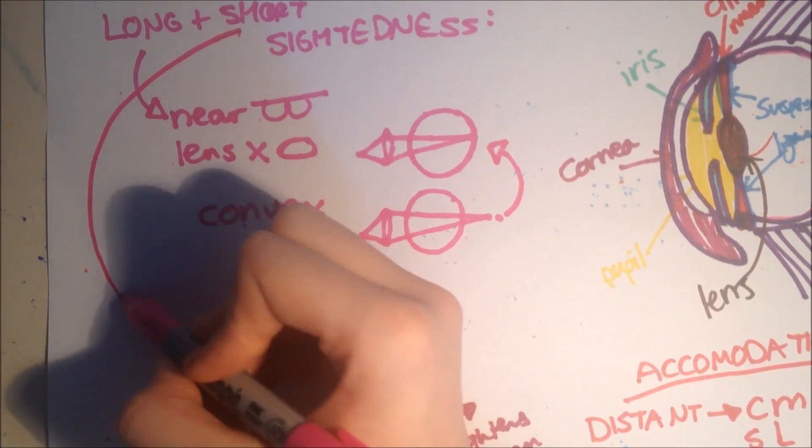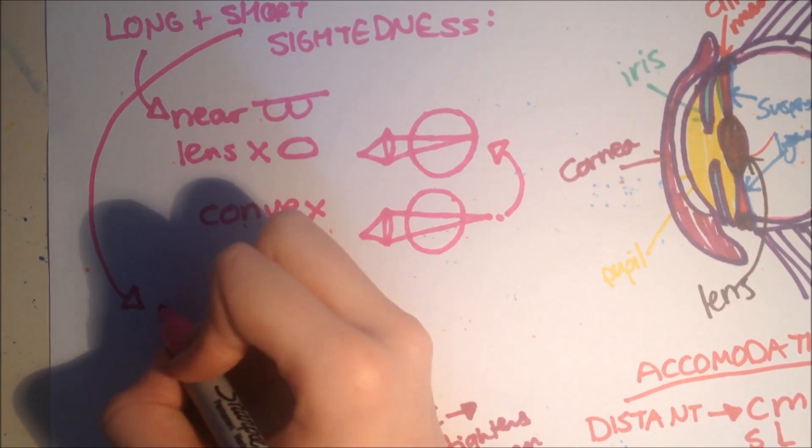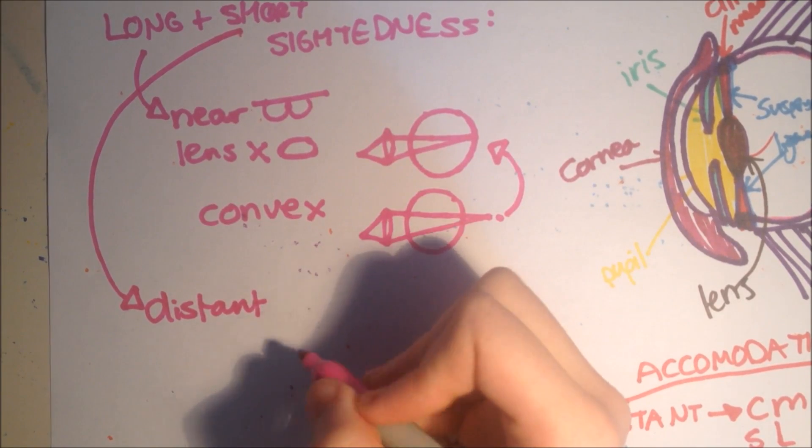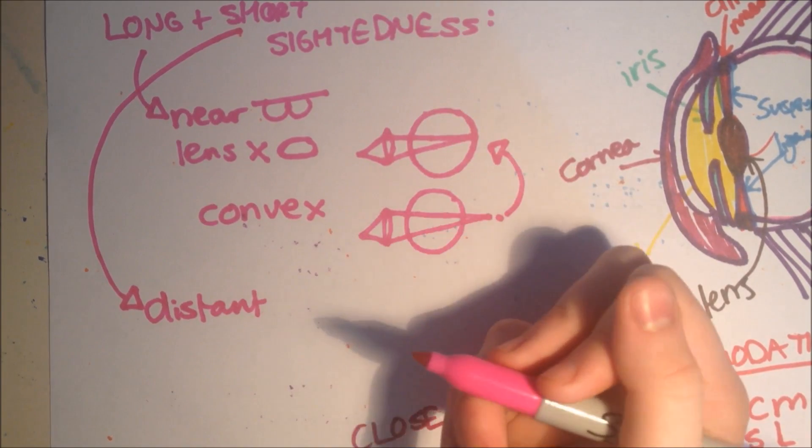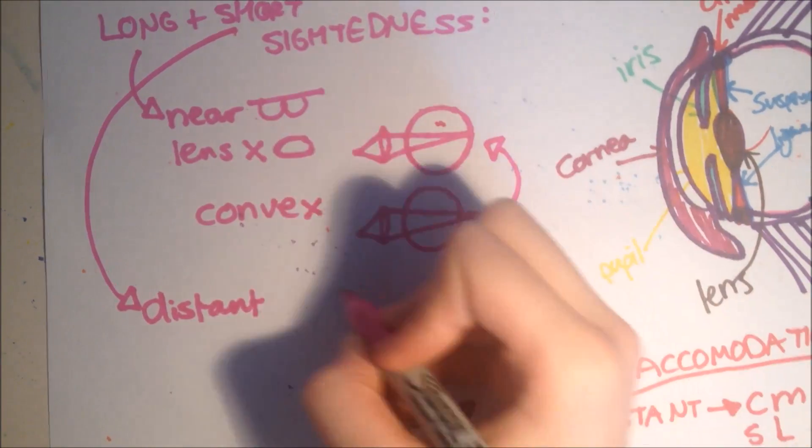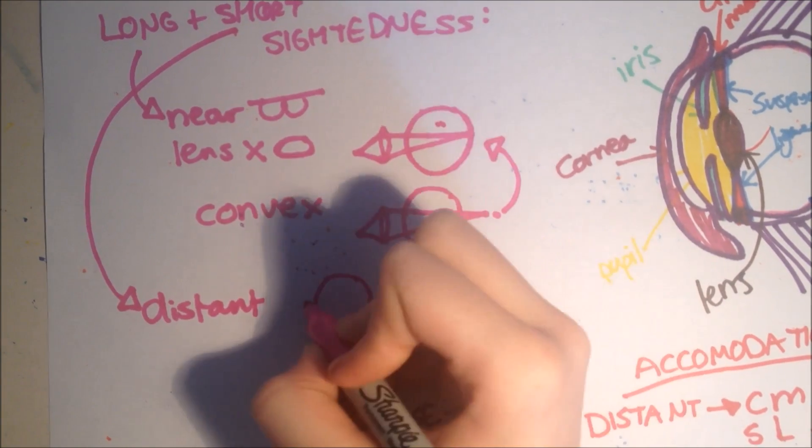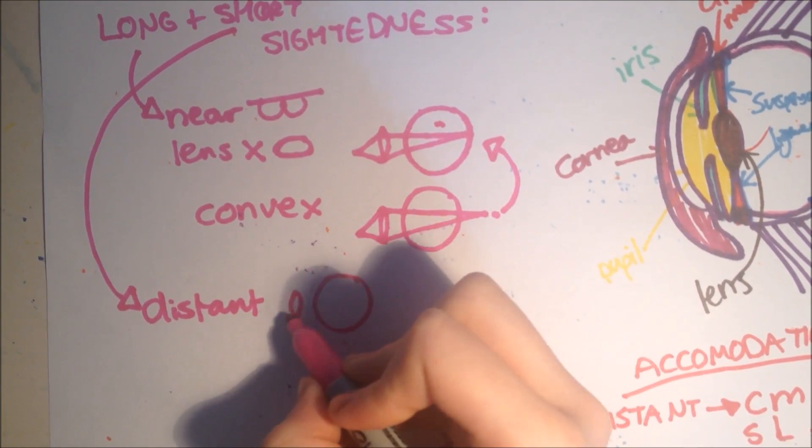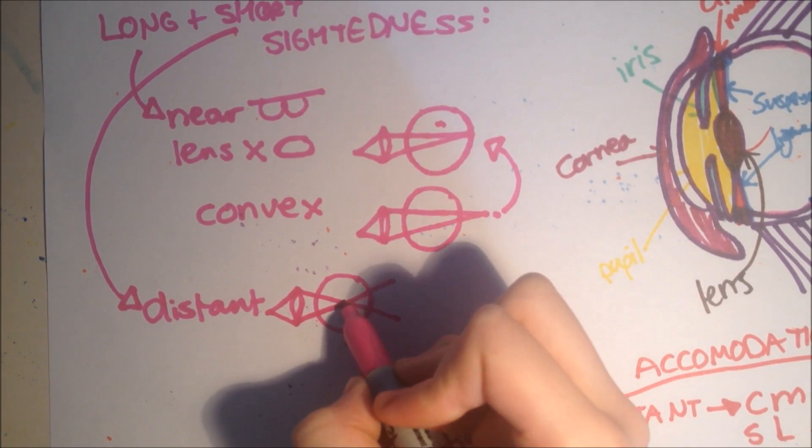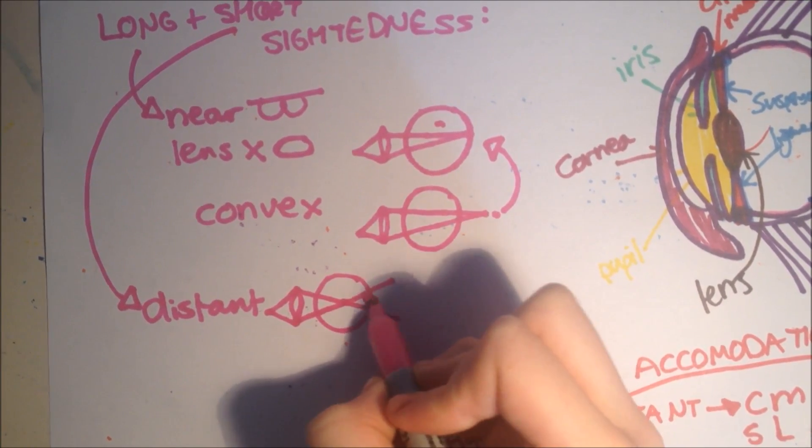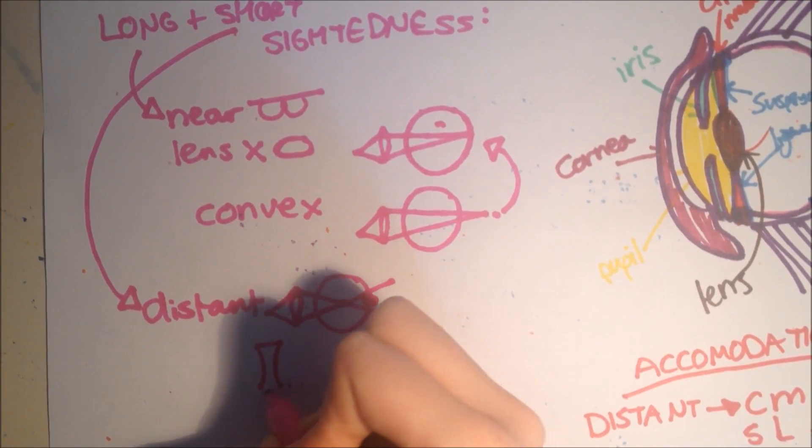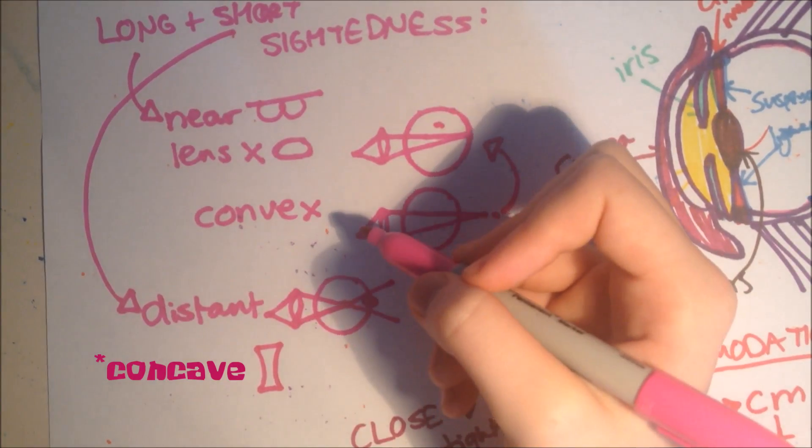Now I am short sighted, and this is when you can't focus on distant objects. This occurs when the lens is the wrong shape again, or the eyeball is too long. So instead of being like this one here, it actually looks like this. And then, it goes like this, and so the focal point is here, rather than here, where the retina is. So to correct it, you need a convex lens, which is like this.